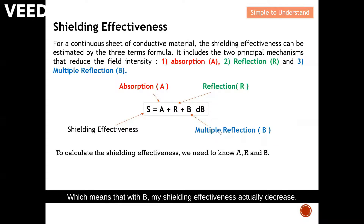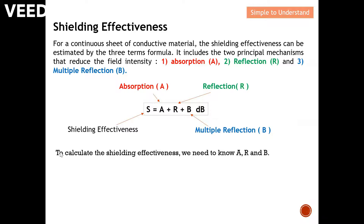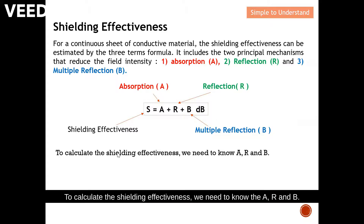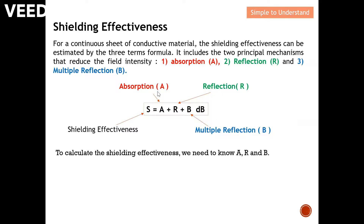B being negative implies that multiple reflection actually causes a degradation of shielding effectiveness, meaning that with B, shielding effectiveness decreases. Later on, I'm going to show you some examples to calculate shielding effectiveness, where we need to know A, R, and B.